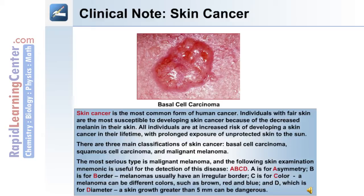The most serious type is malignant melanoma, and the following skin examination mnemonic is useful for the detection of this disease: A, B, C, D. A is for asymmetry. B is for border — melanomas usually have an irregular border. C is for color — a melanoma can be different colors such as brown, red, and blue. D is for diameter — any skin growth greater than 5 mm can be potentially dangerous.